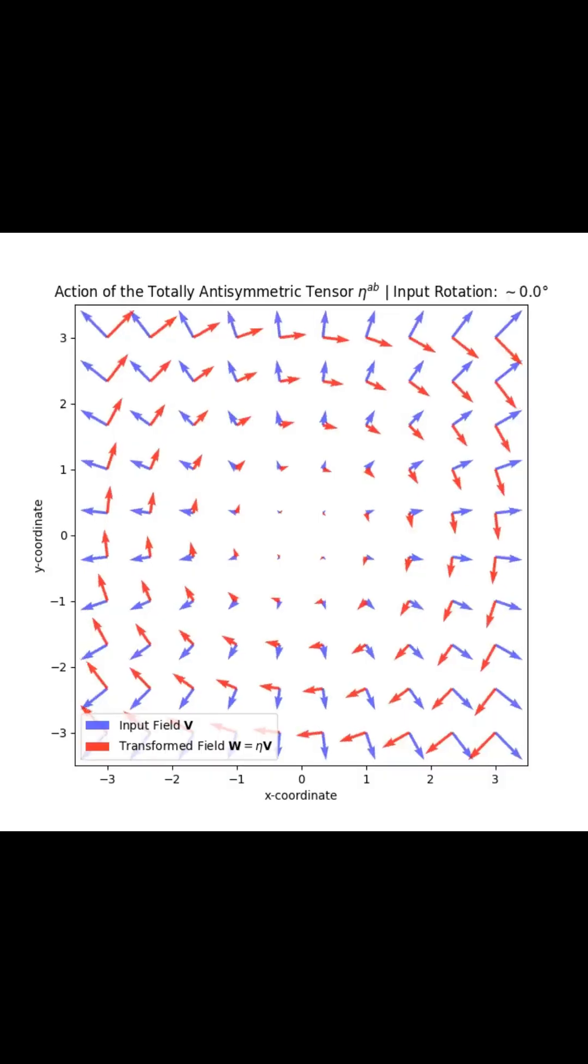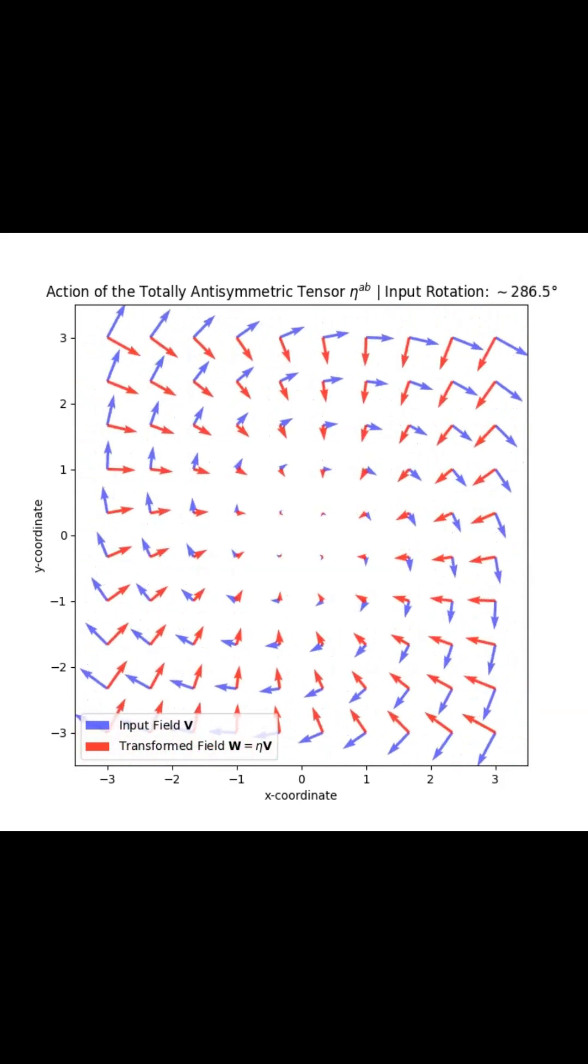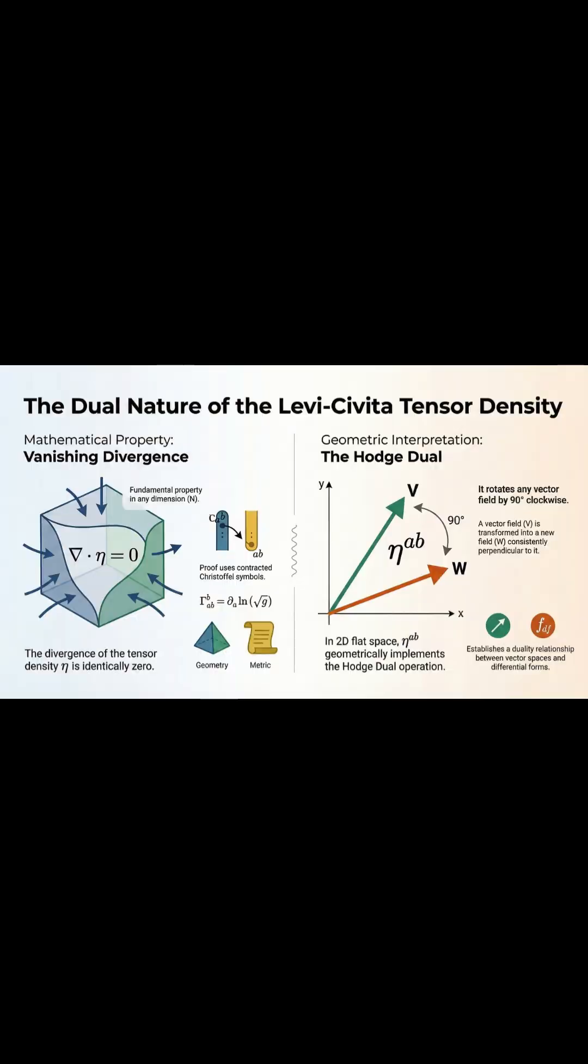Now for the visual side of things. Second, when you shift to a simple, flat, two-dimensional space, this tensor basically becomes a perfect 90-degree rotation machine. It's performing what's called the Hodge dual operation.